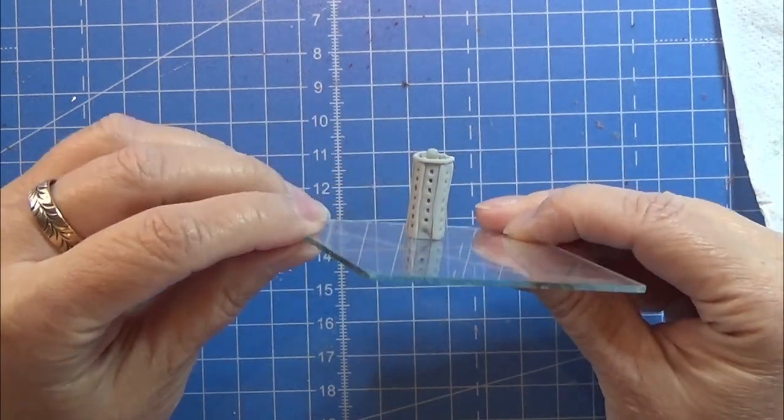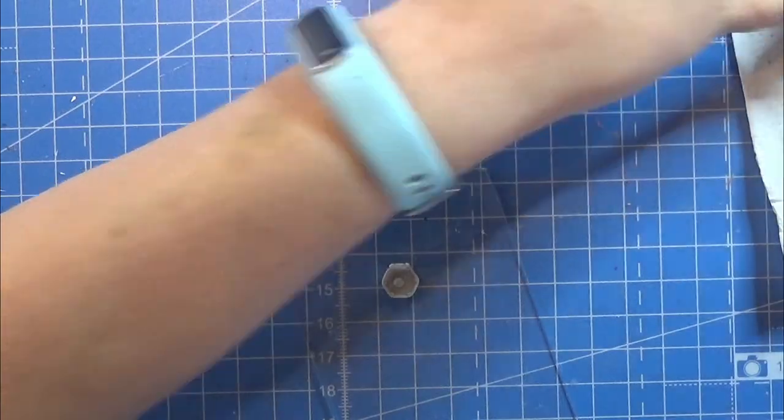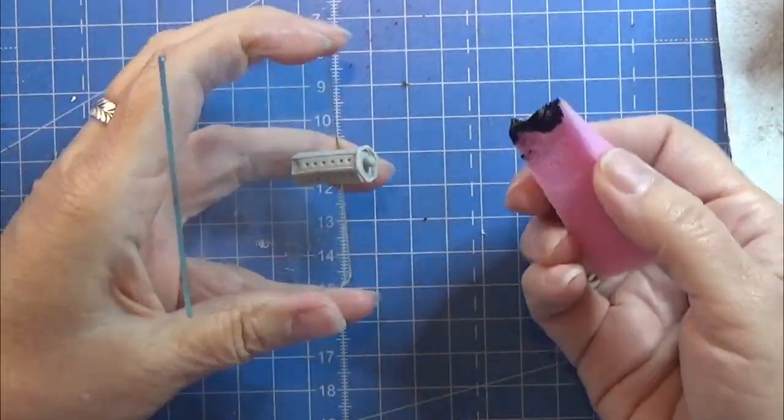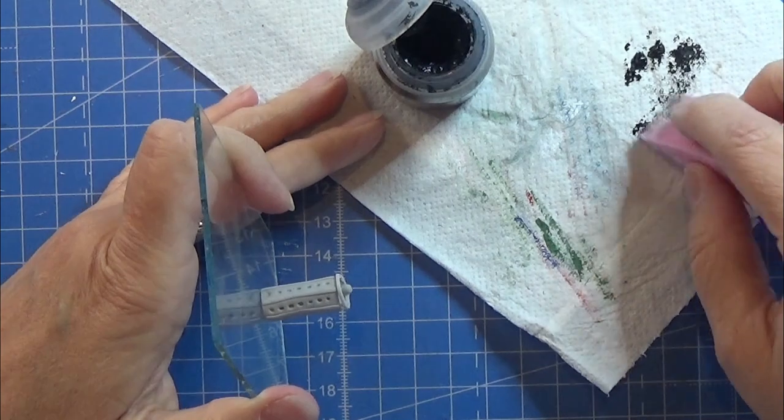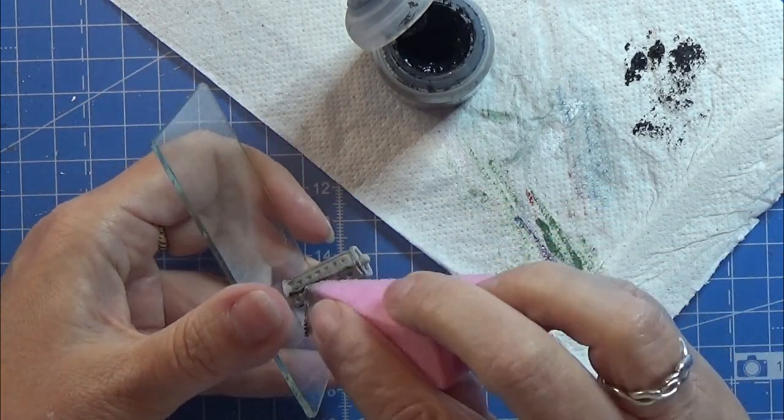When it has cooled down, I am going to paint it a tiny bit. I'm using some black Citadel paint here, and I'm just kind of brushing it on with this. I actually think this is a makeup sponge.